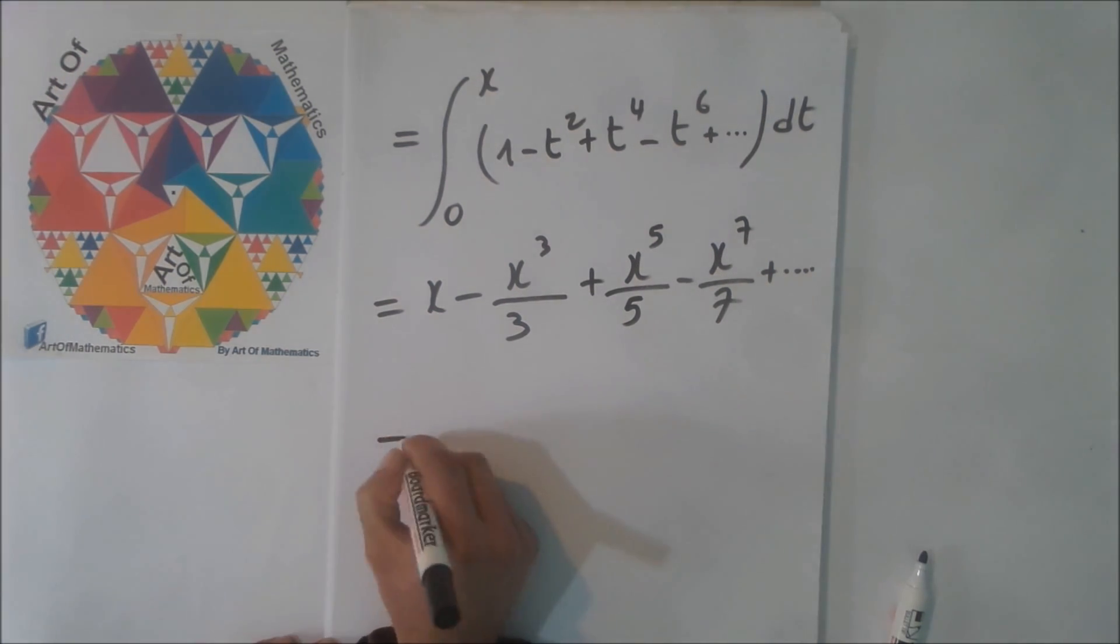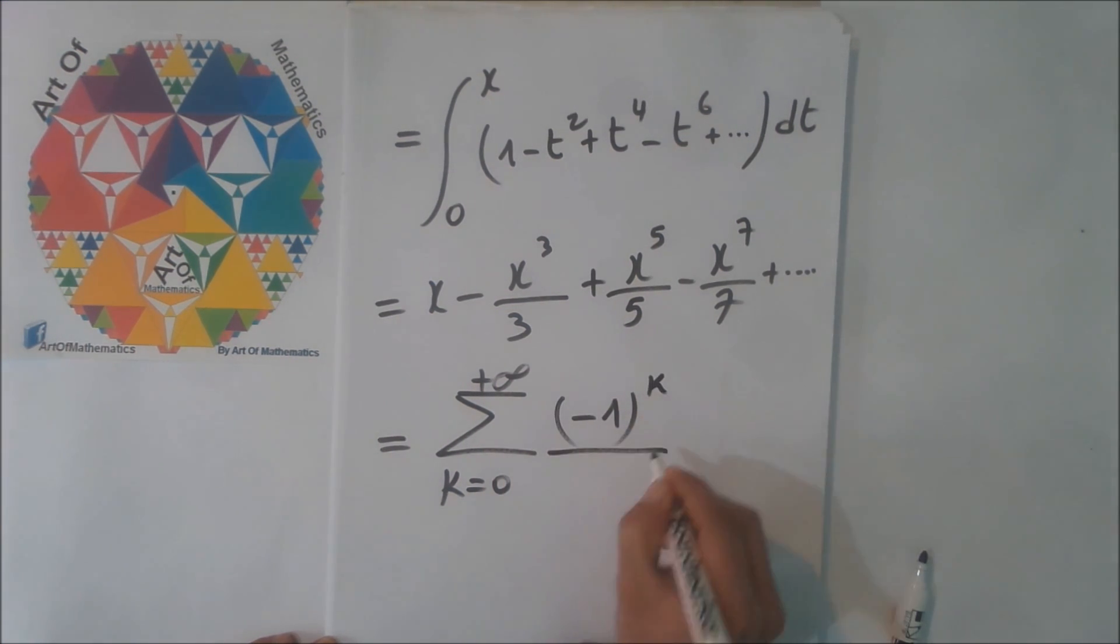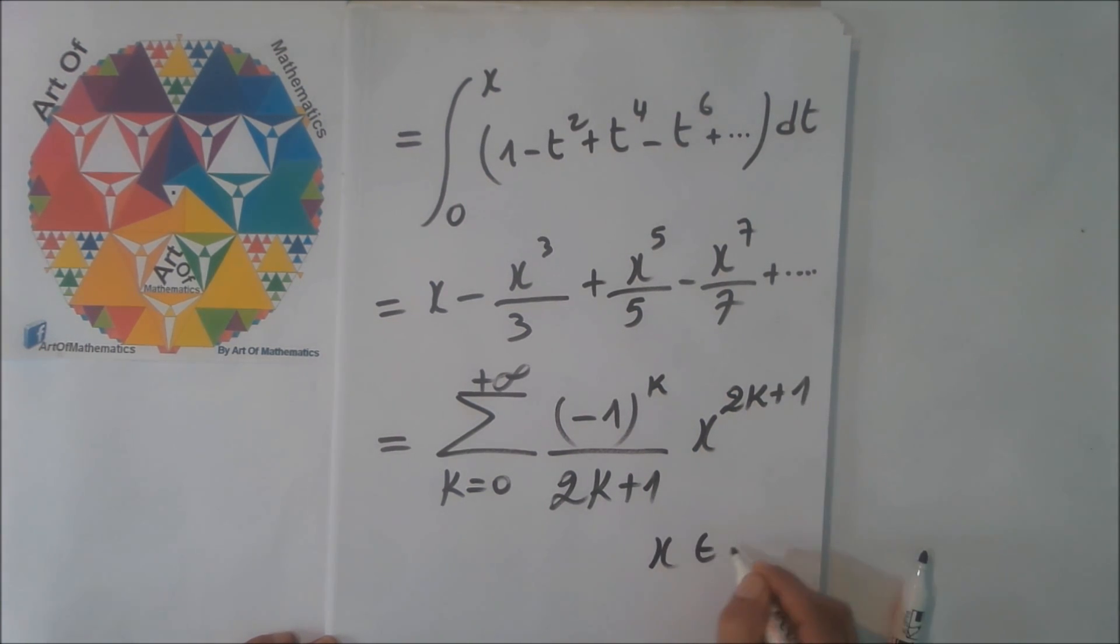This is equal to the sum from k equals 0 to plus infinity of minus 1 to the power k, divided by 2 times k plus 1, multiplied by x to the power 2k plus 1, when x belongs to minus 1 to 1.